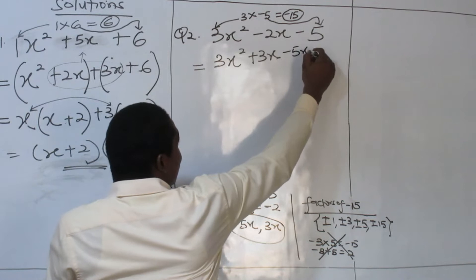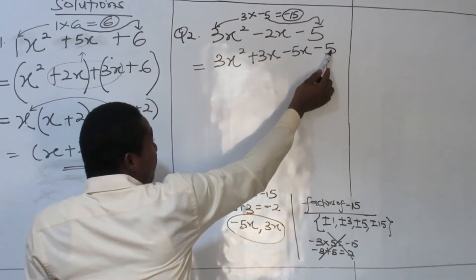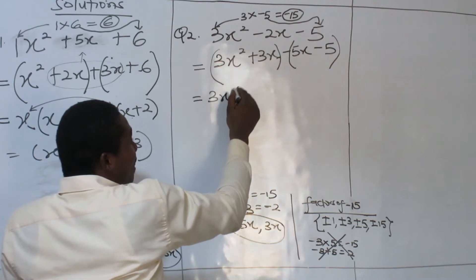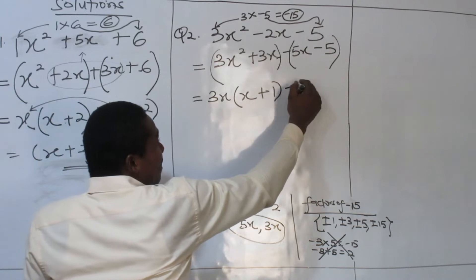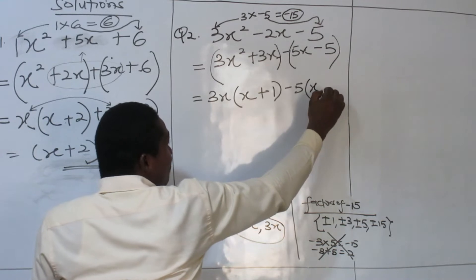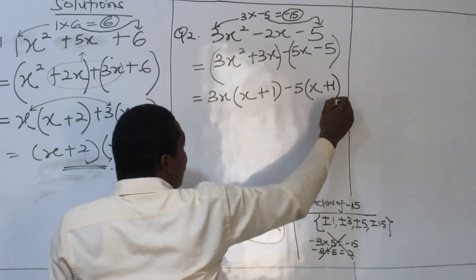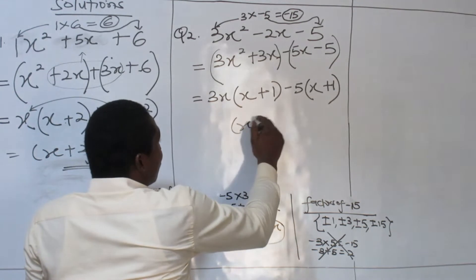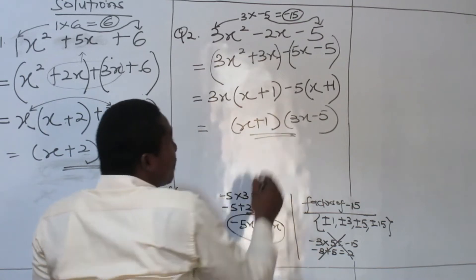Minus 5x, minus 5. Did you see that we look at this one here? We didn't repeat this one here. Now, method of grouping. I factor 3x out — 3x goes here x, 3x goes here 1. Minus 5 out. Minus 5 into minus 5x will give me positive x. Minus 5 into minus 5 will give me positive 1. So take note, whatever you get here, you get the same thing here. So I put them together — factor 1 — and I put the outsiders together. Those standing outside, put them together. That is it.